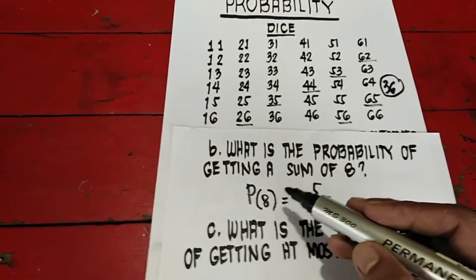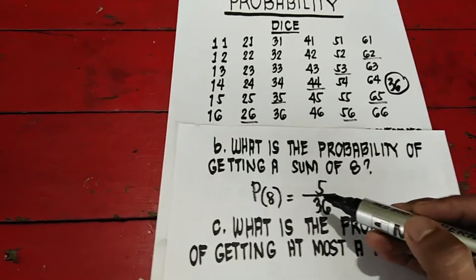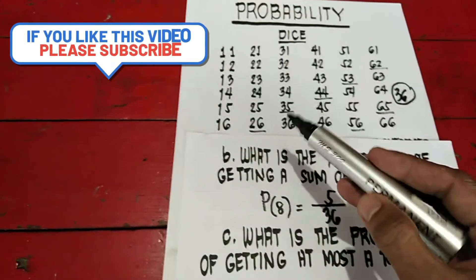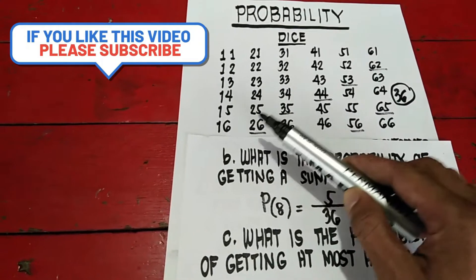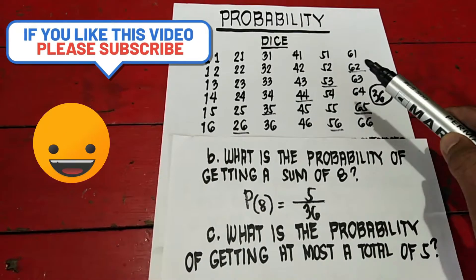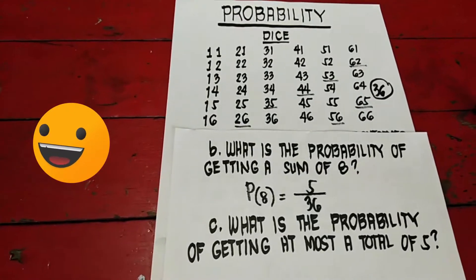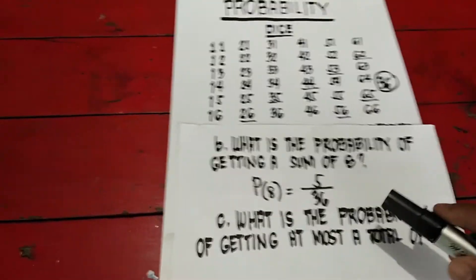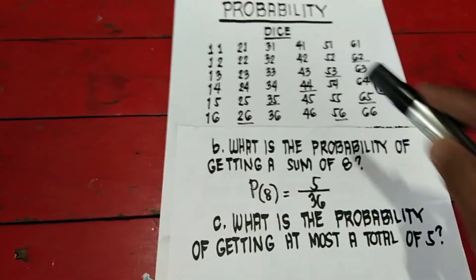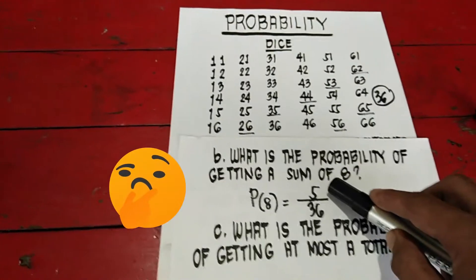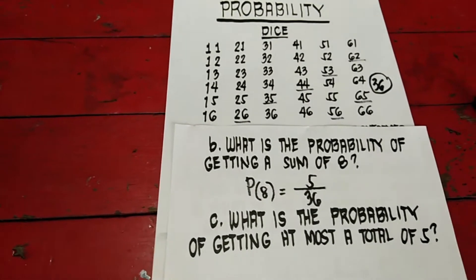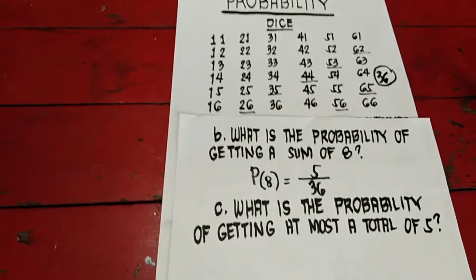Ulitin natin. The probability of getting a sum of 8 is total 36. Tapos hanapin natin doon sa table: 2, 6, 3, 5, 4, 4, 5, 3, and 6, 2. So there are 5 favorable outcomes na pwedeng lumabas doon sa dice natin. Kaya 5 over 36. Yun ang sagot sa B question.